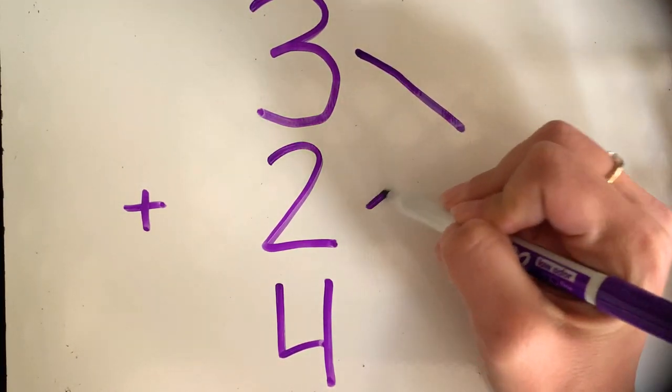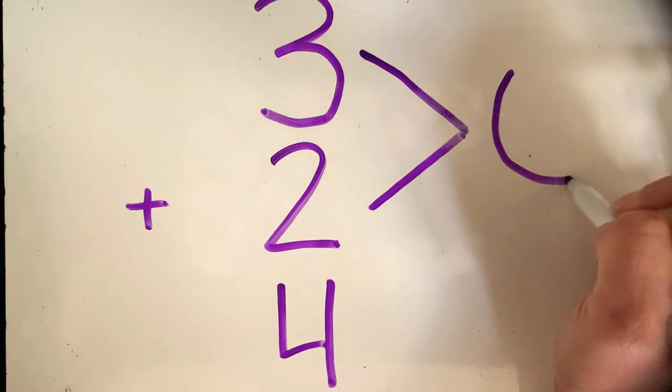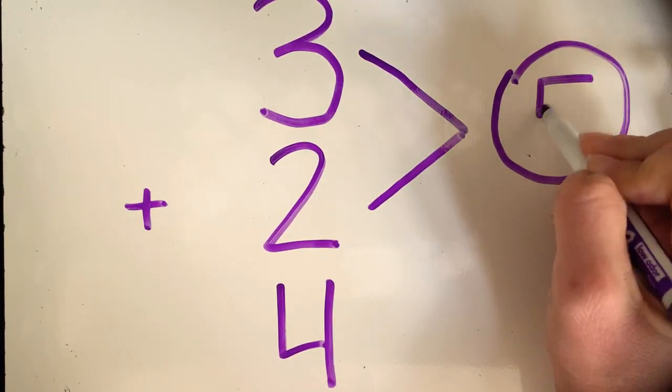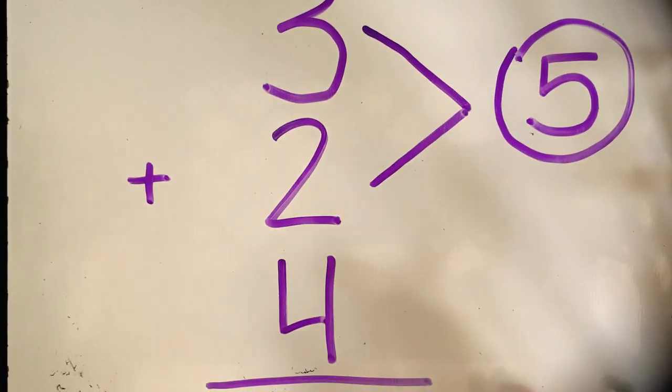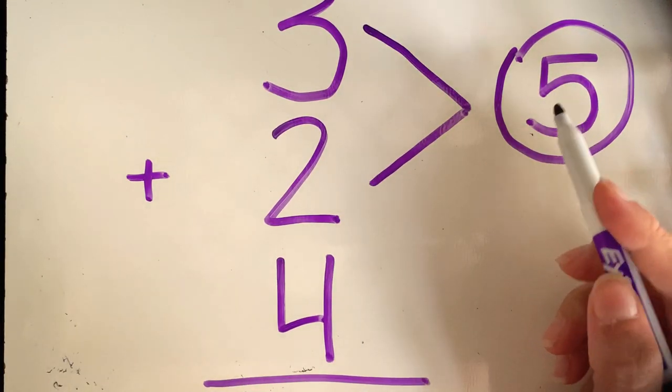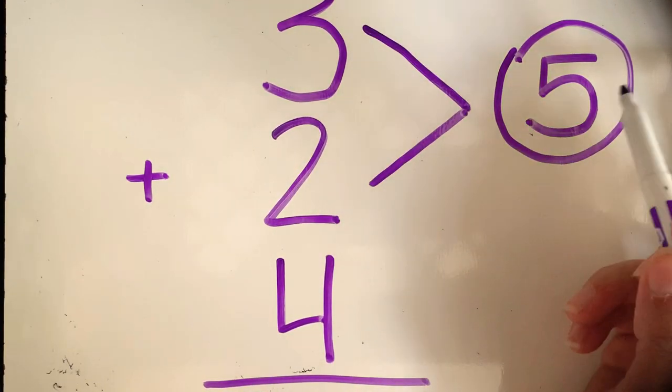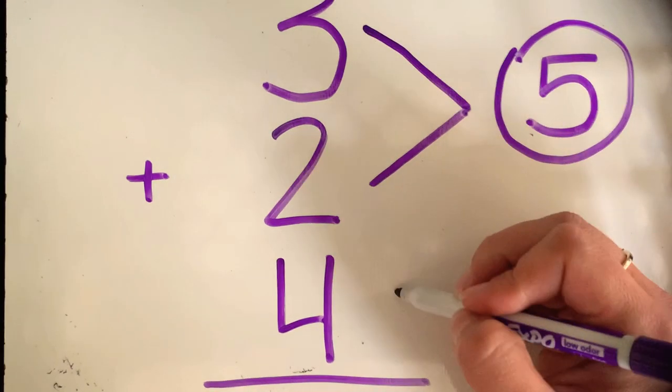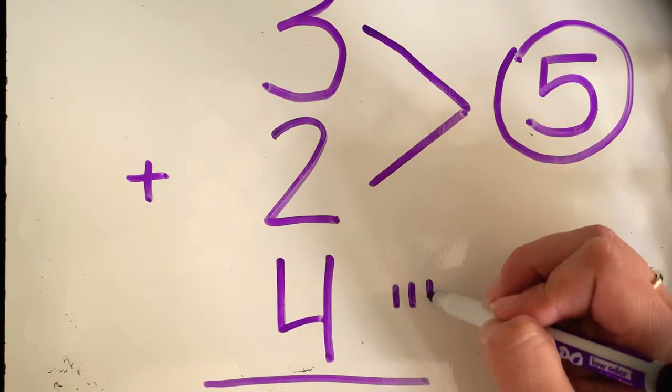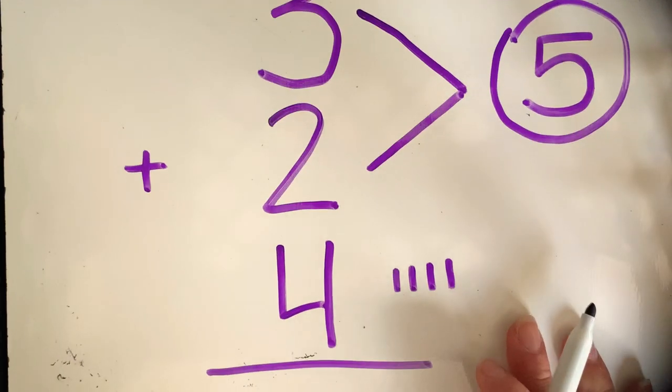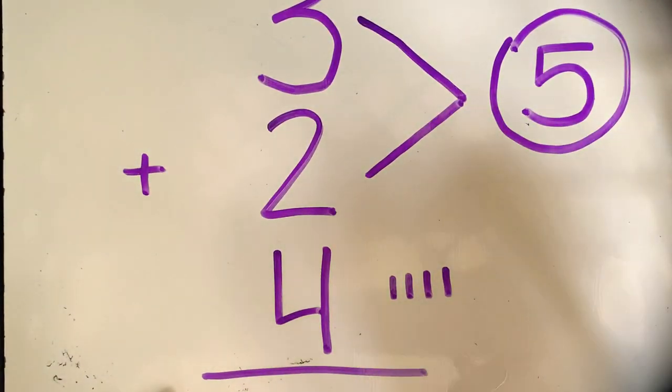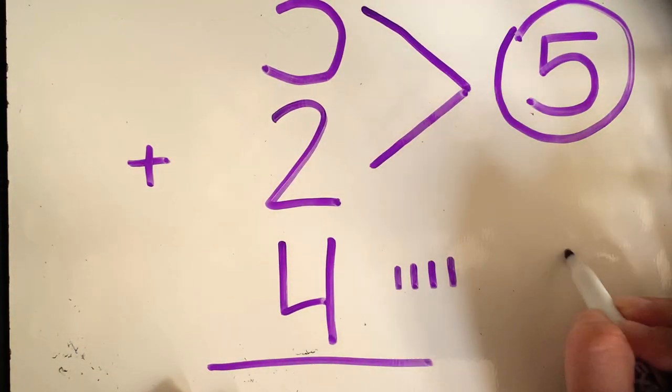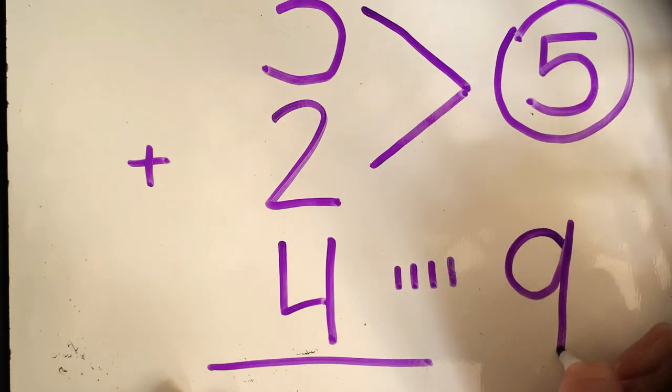So three plus two equals five. And then what they want us to do is add five plus four. So you would take five and count on four: five, six, seven, eight, nine. Our answer, I can't fit it down here on the bottom, but I'll write it here, is nine.